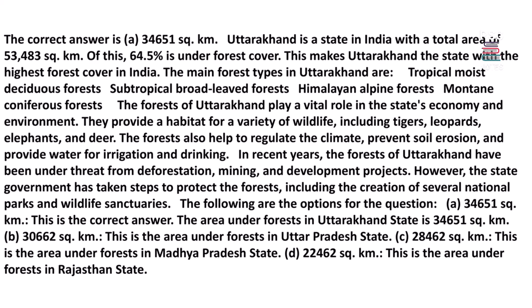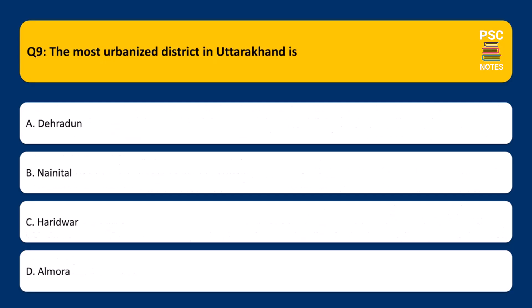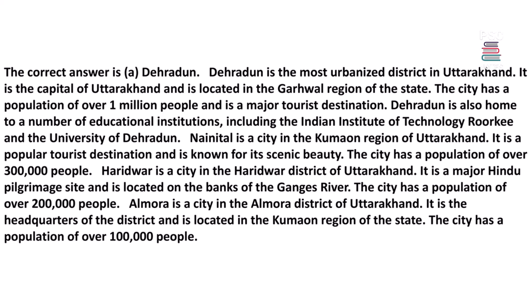The most urbanized district in Uttarakhand is: a. Dehradun. b. Nainital. c. Haridwar. d. Almora. The correct answer is a. Dehradun. Dehradun is the most urbanized district and the capital of Uttarakhand, located in the Garhwal region. The city has a population of over 1 million people and is a major tourist destination, also home to institutions such as IIT Roorkee and the University of Dehradun.